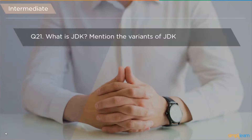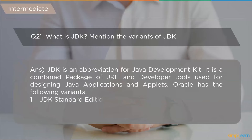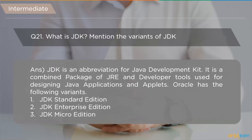The first intermediate question is: what is JDK and what are its variants? JDK stands for Java Development Kit — a combined package of JRE and developer tools used for designing Java applications and applets. Oracle has three variants: JDK Standard Edition for beginners and intermediate developers, JDK Enterprise Edition for professional developers building Java-based applications and frameworks, and JDK Micro Edition.